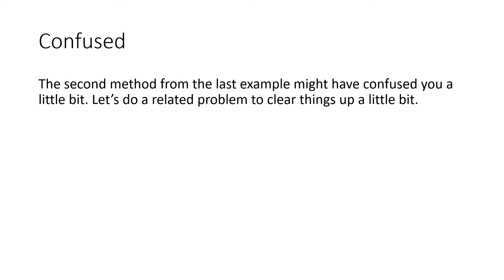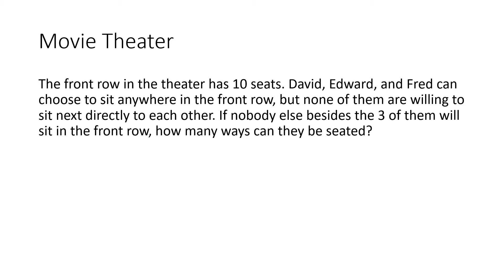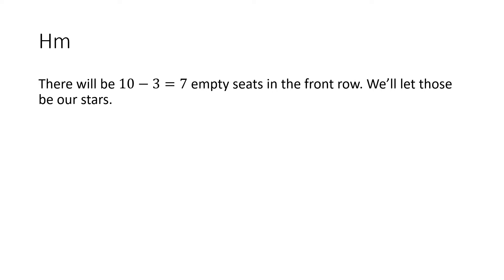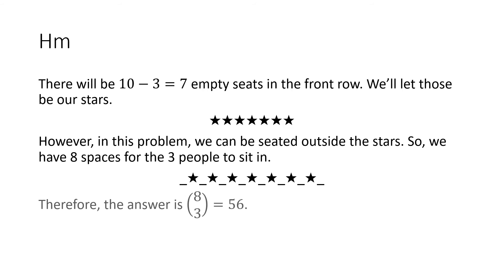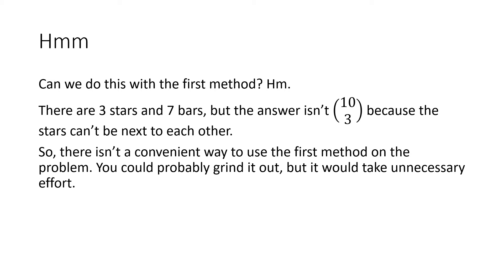Let's do another one to clear things up if you're confused from the second method. We're at the movie theater. The front row has 10 seats. David, Edward, and Fred can choose to sit anywhere in the front row but none of them are willing to sit next to each other directly. If nobody else besides the 3 of them will sit in the front row, how many ways can they be seated? There will be 10 minus 3 equals 7 empty seats — we'll let those be our stars. In this problem people can be seated on the edge, so we have 8 spaces for the 3 people to sit in. Therefore the answer is 8 choose 3, or 56, because there are 8 spaces and 3 people. You probably can do the first method but it's going to be really complicated and tedious.